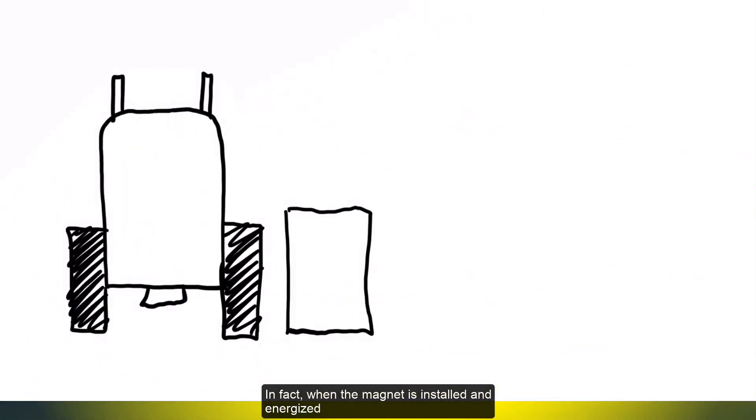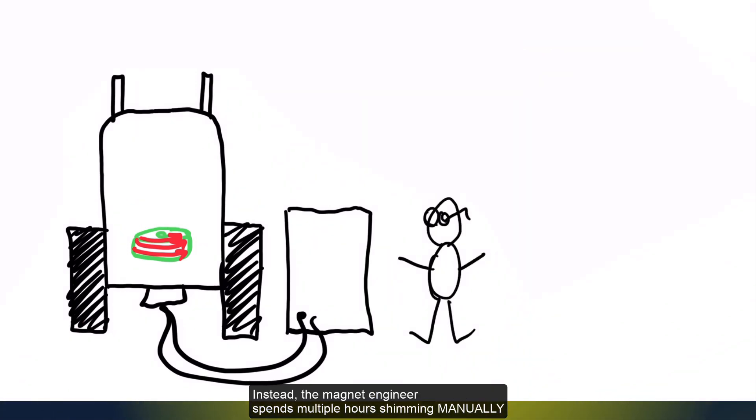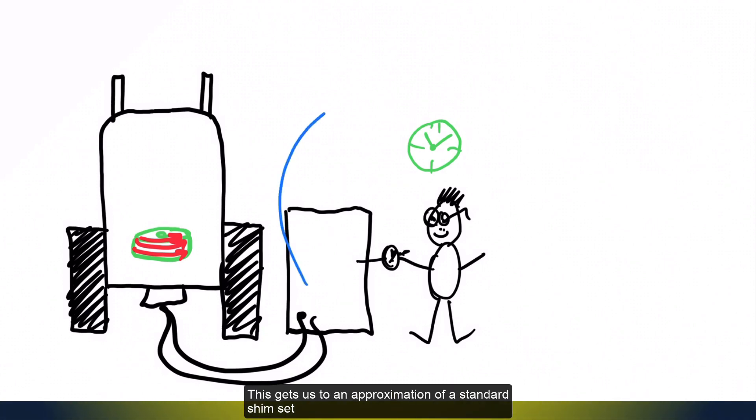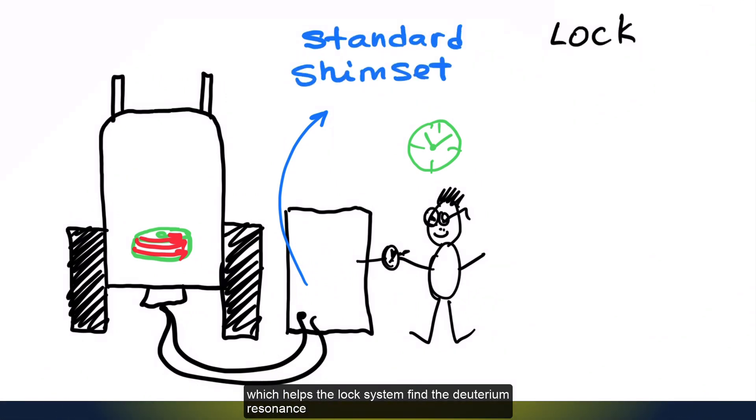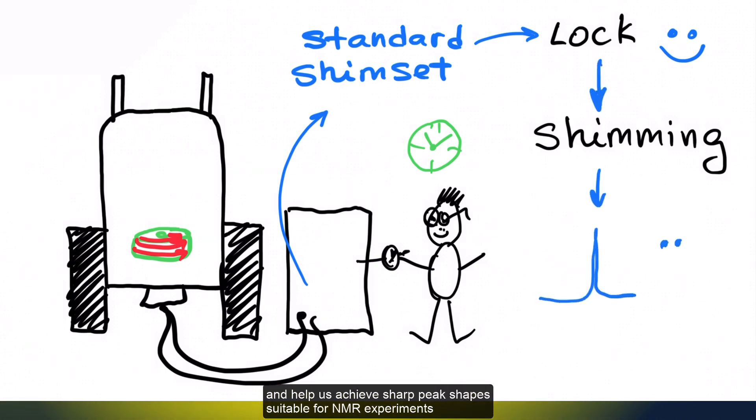In fact, when the magnet is installed and energized, you cannot lock or automatically shim immediately. Instead, the magnet engineer spends multiple hours shimming manually, just observing a shape of a deuterium or proton peak and adjusting the shim currents. This gets us an approximation of a standard shimset, which helps the lock system find the deuterium resonance. Once the spectrometer is initially locked, the automatic shimming algorithm will work and help us achieve sharp peak shapes suitable for NMR experiments.